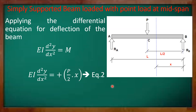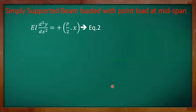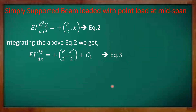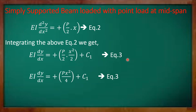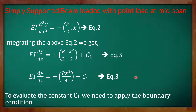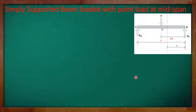We are going to integrate this equation twice to get the slope as well as the deflection equation. Integrating equation two, we get EI dy/dx equals P/2 times x²/2 plus an integration constant C1, which simplifies to Px²/4 plus C1. Let this be equation three.